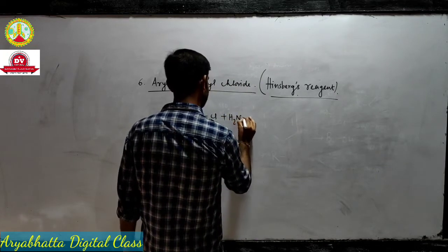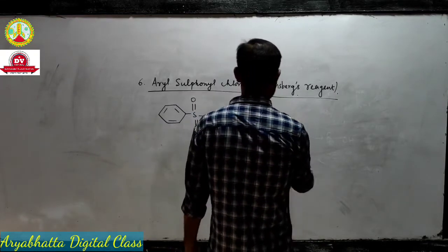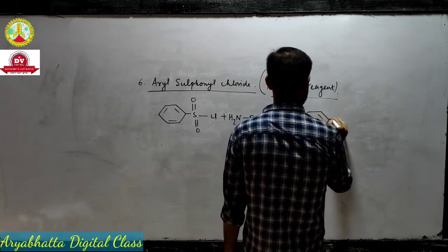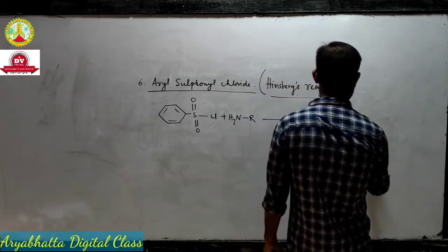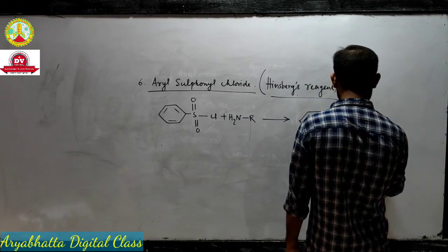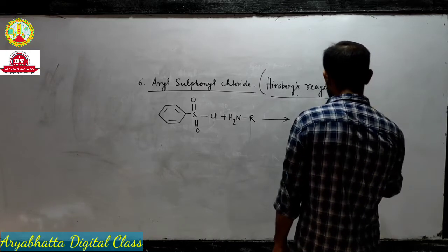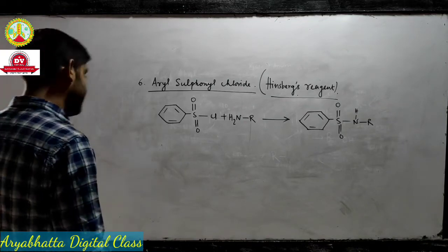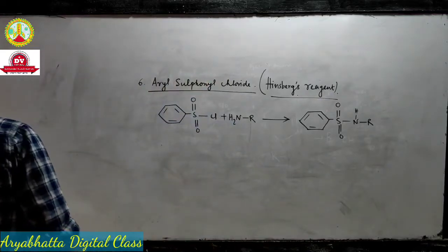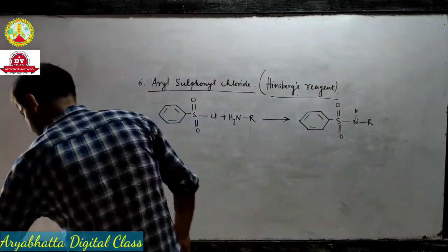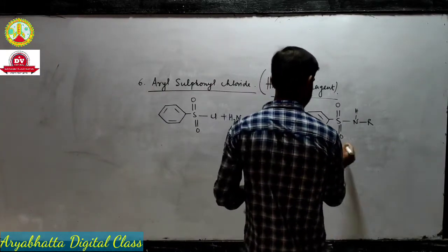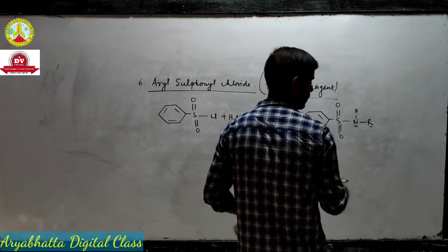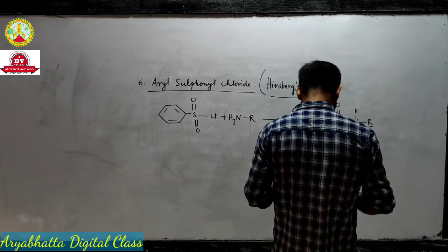When Hinsberg's reagent reacts with a primary amine, it gives a product called N-alkyl benzene sulfonamide. It is N-alkyl because on nitrogen we have an R group — if it is ethyl, we write N-ethyl benzene sulfonamide.